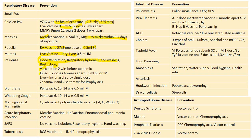Influenza vaccination: two weeks before the epidemic is needed. Killed vaccines — two doses, four weeks apart, 0.5 ml subcutaneous or IM. Live vaccines are intranasal spray, single dose. Zanamivir and oseltamivir for prophylaxis. Diphtheria: along with Pentavac, 1-6-14.5 ml IM, in the national immunization schedule. Whooping cough also in Pentavac. Meningococcal meningitis: quadrivalent polysaccharide vaccine containing A, C, W-135, Y subtypes. Pneumococcal vaccine for ARI. SARS: no vaccine; isolation is the best treatment.